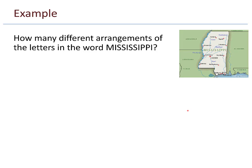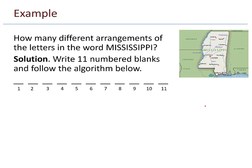To begin, how many different arrangements are there of the letters in the word Mississippi? Here's how we might tackle this problem. Write 11 numbered blanks and follow the algorithm below. First, choose one of the blanks to place the m. So I'm just working my way through the word Mississippi. The first thing I come across is the m.